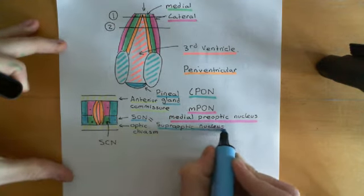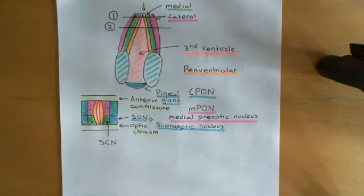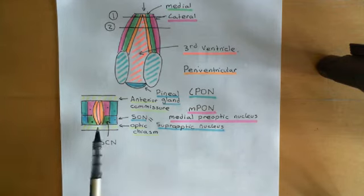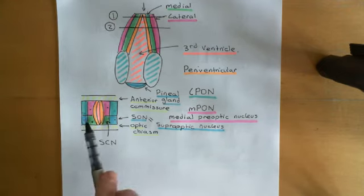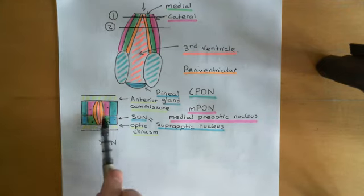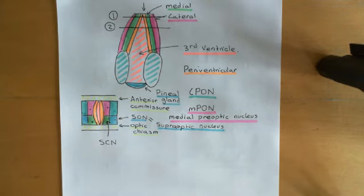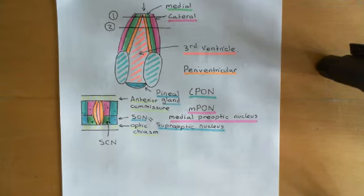Now we know where the suprachiasmatic nuclei are, and why they are called the suprachiasmatic nuclei: they sit above the optic chiasm — perfectly above it — and below the medial preoptic nuclei, lateral to the periventricular portion of the hypothalamus. They are at this very anterior portion of the hypothalamus, located just above the optic chiasm.